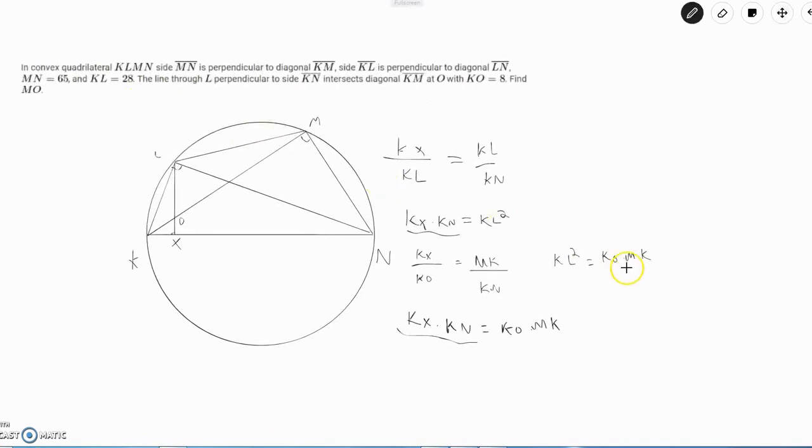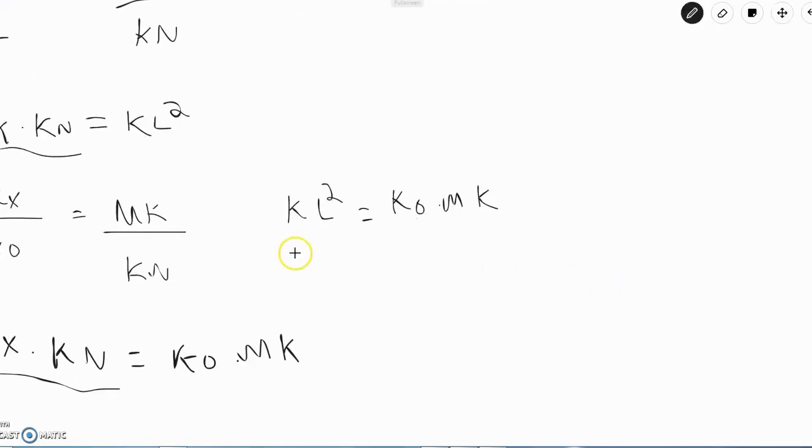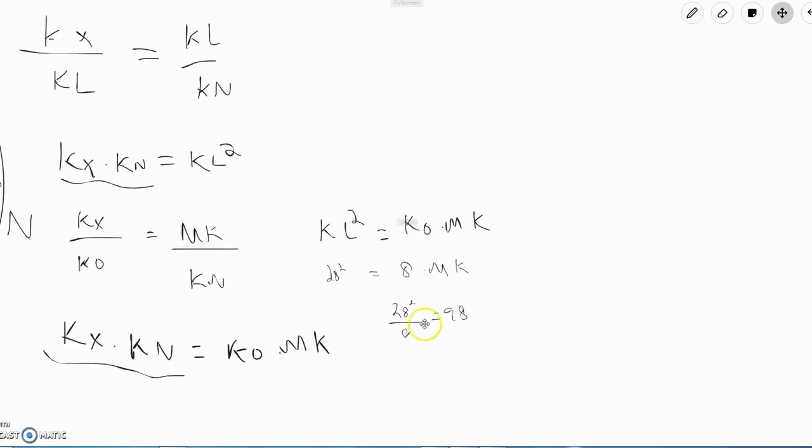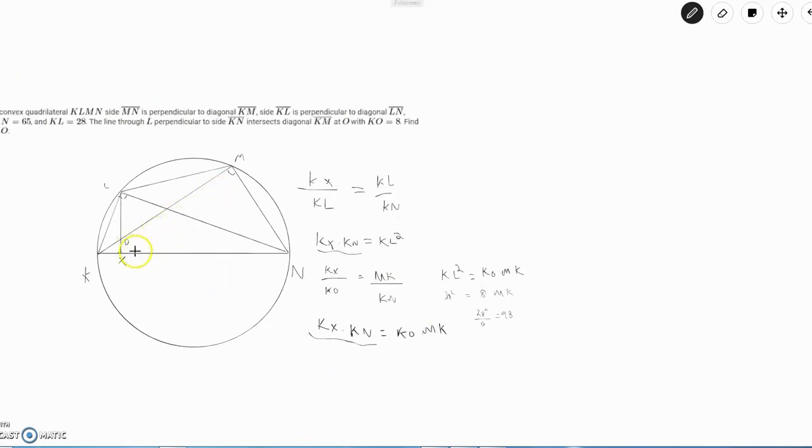Now since we're given KL and KO, we can just plug in our lengths and we can find MK. We have KL squared is equal to 28 squared, which is equal to 8 times MK. 28 squared over 8 is equal to MK, which is equal to 98. Thus, since MK is equal to MO plus OK, we have that 98 is equal to 8 plus MO, so MO is equal to 90.